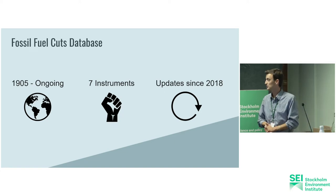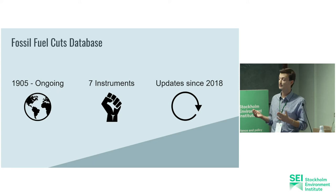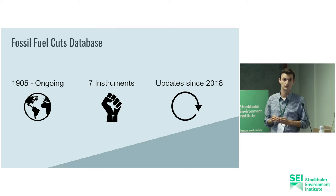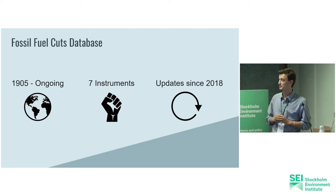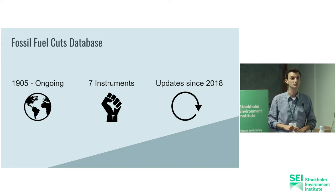The fossil fuel cuts database was the first database that catalogued all initiatives that sought to constrain fossil fuel production. The first case goes back as far as 1905, though our research is really focused on 1988 onwards. We have seven different instruments that we have inventoried — instruments that can be used by civil society organizations or governments to keep fossil fuels in the ground directly or indirectly. There have been updates since 2018, when it was first created, updated about twice a year.